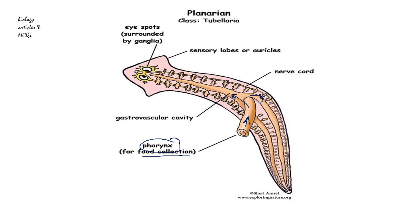Finally, after extracellular digestion, the particles go inside the cells of the intestine, which are mainly phagocytic cells. The phagocytic cells then start digesting the food further — this is intracellular digestion. So firstly extracellular digestion is carried out in the pharynx and intestine, and intracellular digestion is carried out in the phagocytic cells of the intestine.